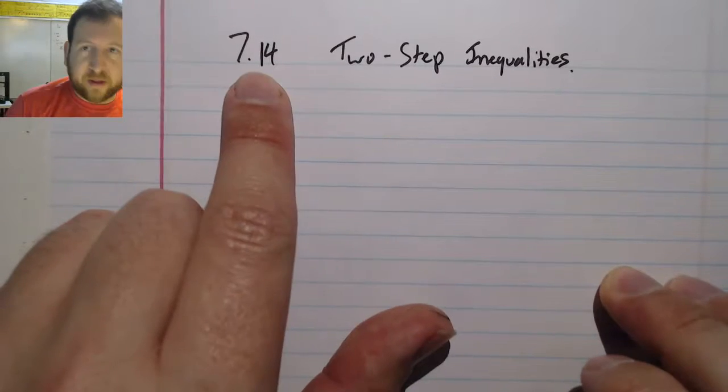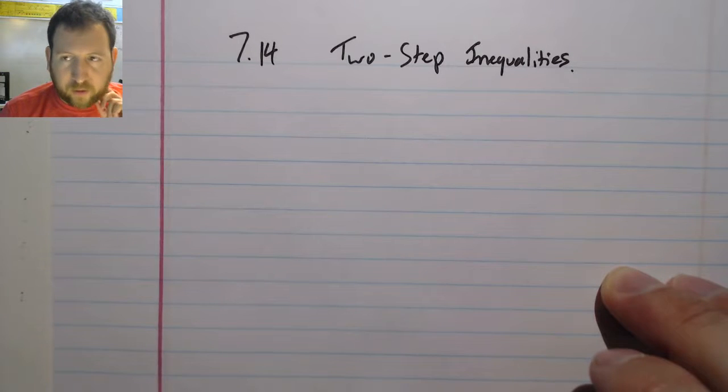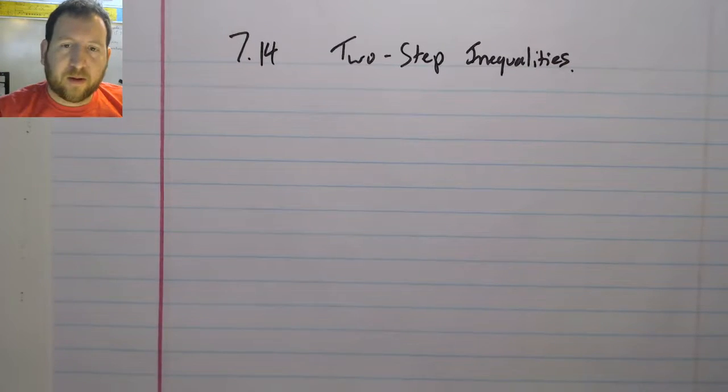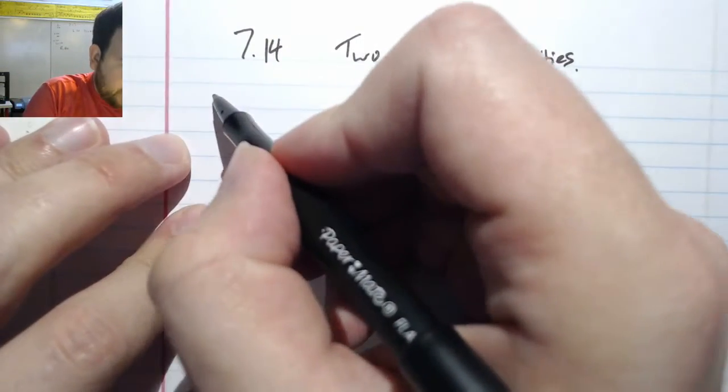All right, we're gonna go with 7.14 and it's called two-step inequalities. In a problem like this we're going to look at a quick example and we're going to be collecting some dragonflies.